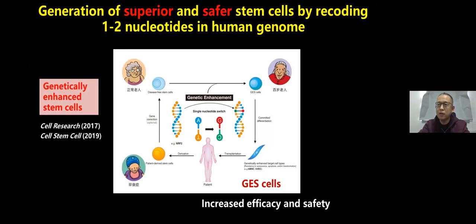In summary, using gene editing, we can not only repair gene mutations in stem cells, but also improve the ability of stem cells to resist their own aging, various stresses, and tumorigenic transformation. We hope that these cells will one day be used to treat aging-related diseases.